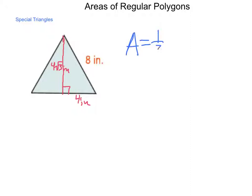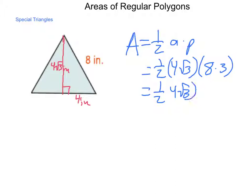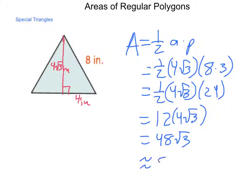So now, we can apply our formula. Area equals one-half the apothem times the perimeter, so that's one-half of four square root three times the perimeter, which is eight times three. So I get one-half four root three times 24. Again, commutative property, I can multiply the half and the 24, gives me 12 times four root three. Multiplying that, I come out with 48 square root of three. That is my exact answer. If I wanted to find something more decimal approximate, I could say this is approximately equal to 83.1 square inches.